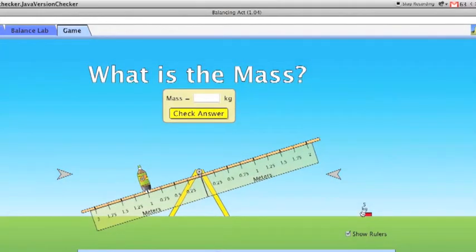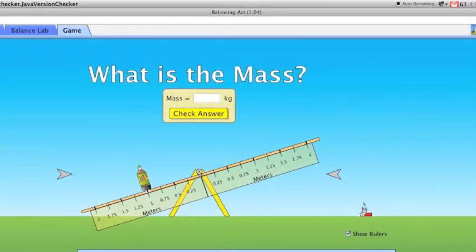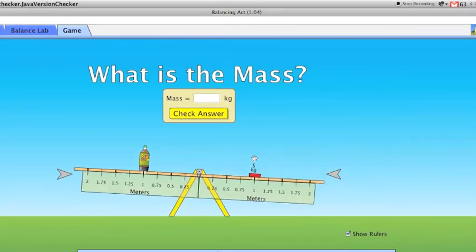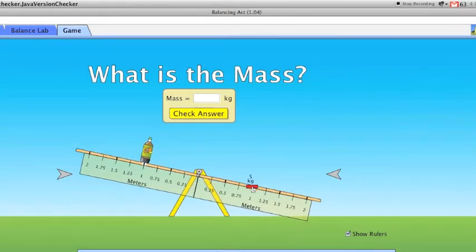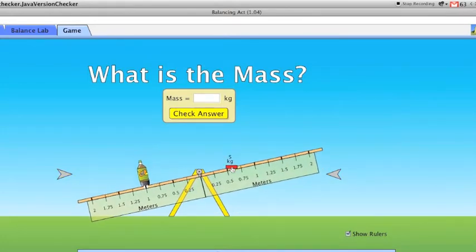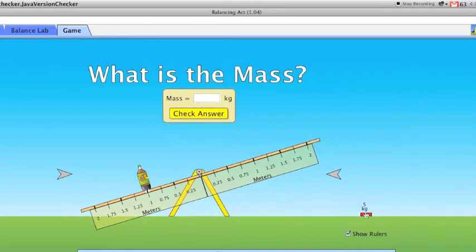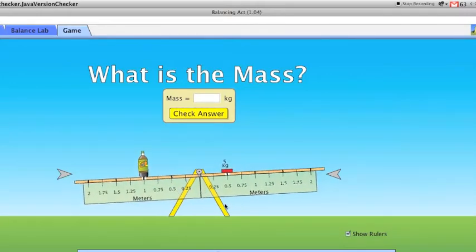In this next problem, I'm asked to find the mass of this bottle. Now I notice it's located at 1 meter. If I can find where this 5 kilogram mass balances the other side, then I will have enough information I can find the mass of the bottle. So I'm going to take the 5 kilogram mass, and I'm going to see if it balances at 1, and it doesn't. It makes it go down. So I'm going to move it closer to the fulcrum at 0.5 meters. And I find that yes, it does balance.